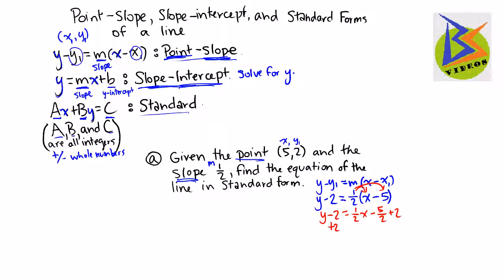And so now these cancel. We have y equals 1/2 x minus 5/2 plus, let's say, 4/2 is a negative 1/2. So if we look here, we actually see that this is in slope-intercept form.